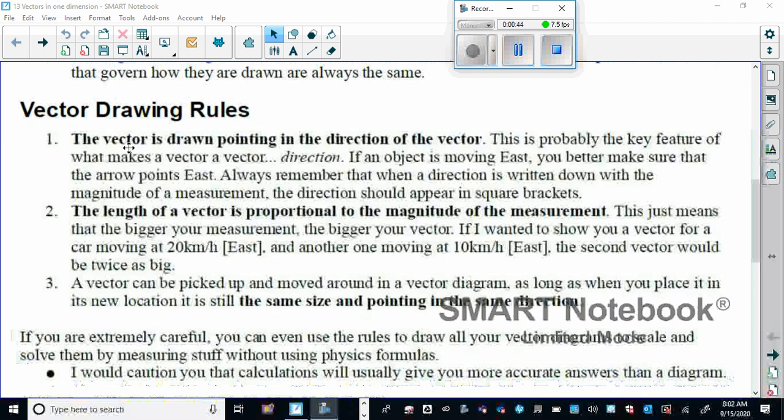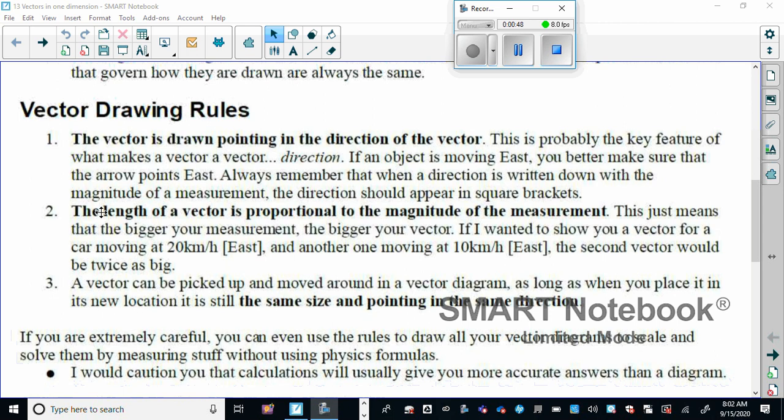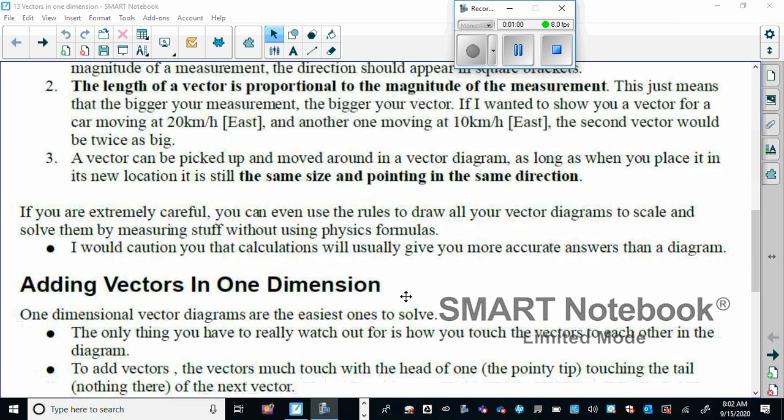Vector drawing rules. The vector is drawn pointing in the direction of the vector, and number two, the length of the vector is proportional to the magnitude of the measurement. And number three, a vector can be picked up and moved around in the vector diagram as long as when you place it in the new location it is still the same size and still pointing in the same direction.